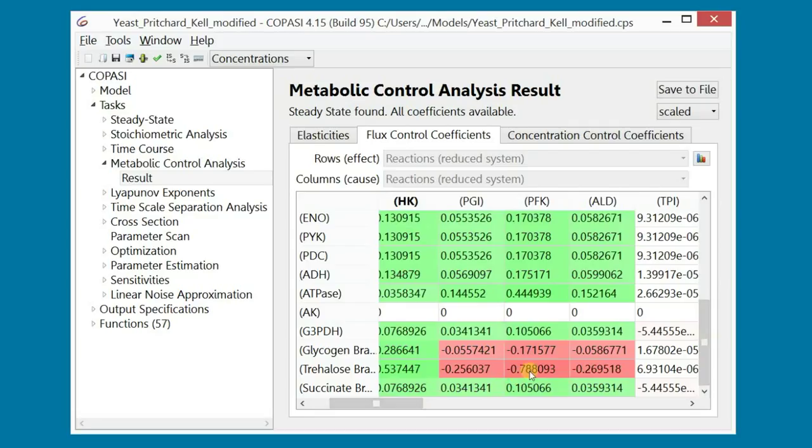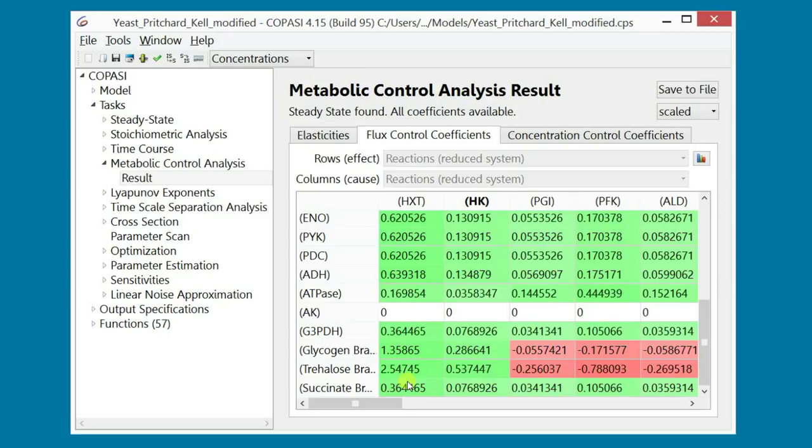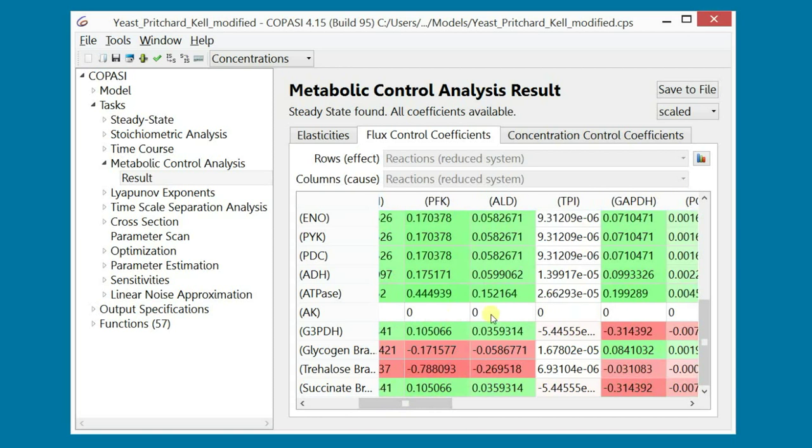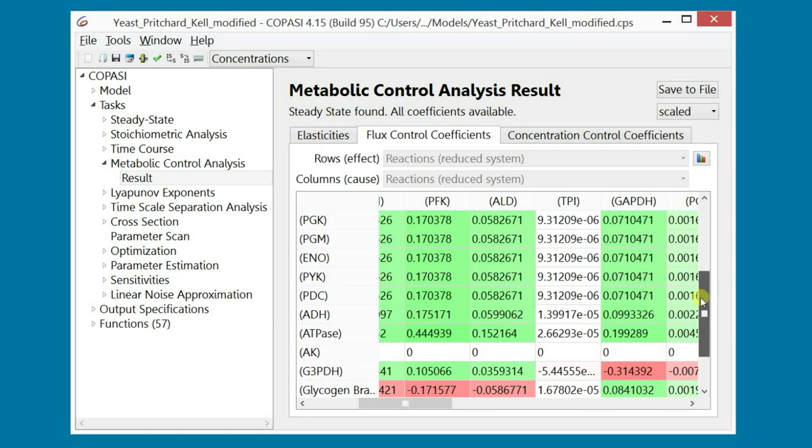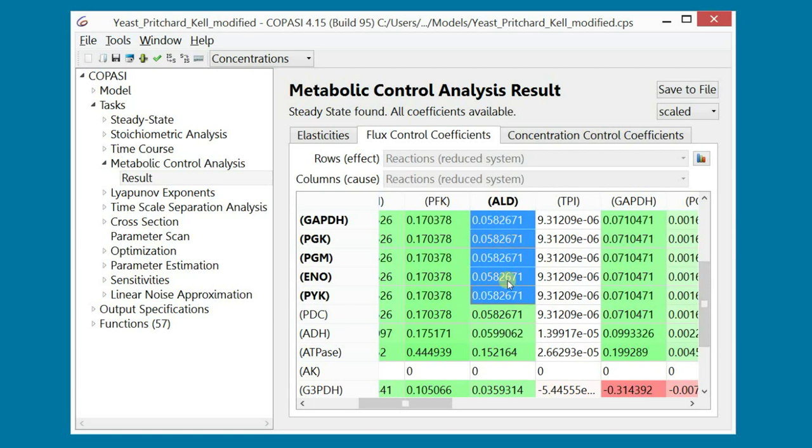Please note that the control coefficients can be negative. This means that if we increase the activity of this enzyme, the flux of this reaction will decrease. Like in all matrices displayed by Copasi, there's also a color code to help you. Intense shades of green are associated with higher control coefficients. Intense shades of red with highly negative coefficients. The pale cells are associated with coefficients close to zero. You will also notice that some entries of this matrix have the same number across a given column. This means that the control exerted by the enzyme on the corresponding fluxes is the same. The reason is that these fluxes are bound to be equal at steady state, due to the stoichiometry of the network. As a consequence, a perturbation on the activity of an enzyme will have the same effect on the steady state flux of such reactions.